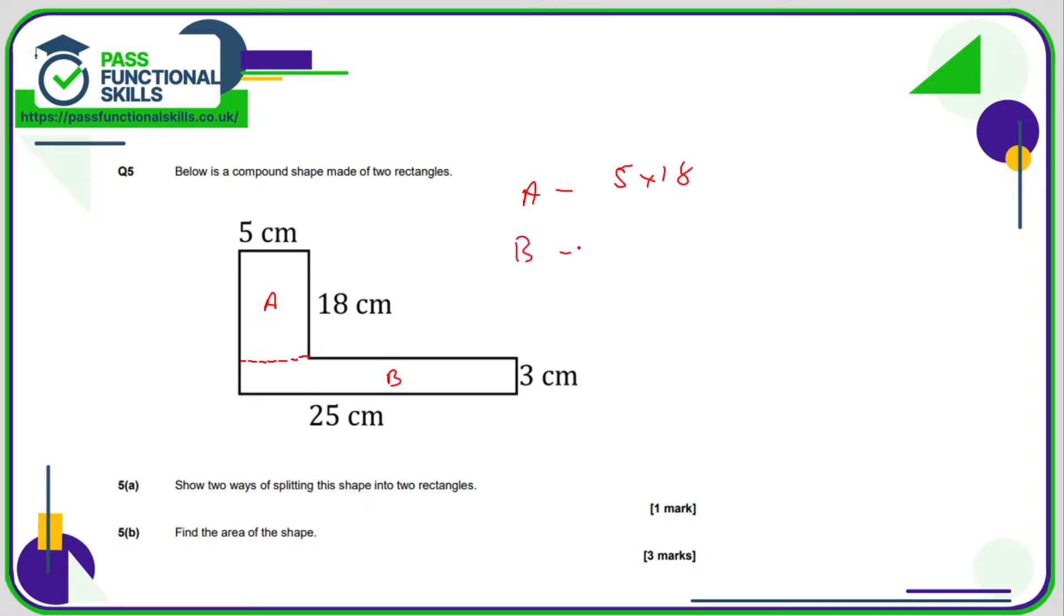and B is 3 times by 25, which is 75. And 5 times 18, that comes to 90. So 90 plus 75 comes to 165 square centimetres.